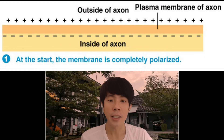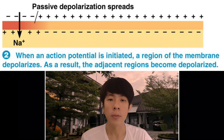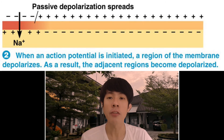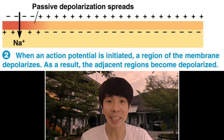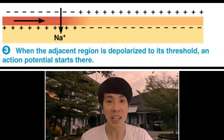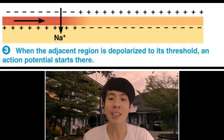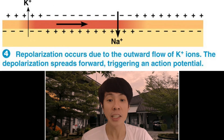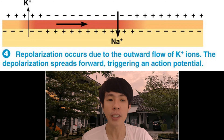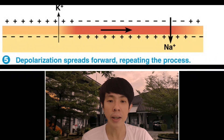At the start, the membrane is completely polarized. When an action potential is initiated, a region of the membrane depolarises. As a result, the adjacent regions become depolarised. When the adjacent region is depolarised to its threshold, an action potential starts there. Repolarisation occurs due to the outward flow of potassium ions. The depolarisation spreads forward, triggering an action potential, and the process repeats.